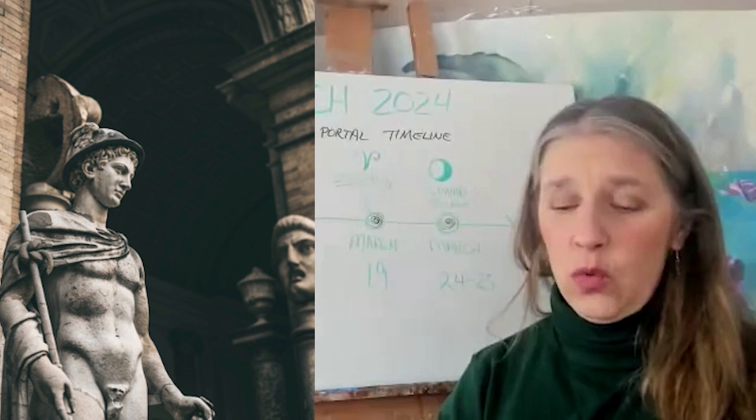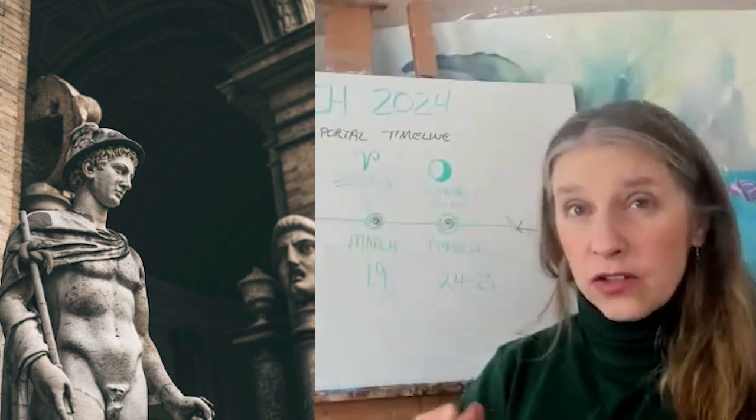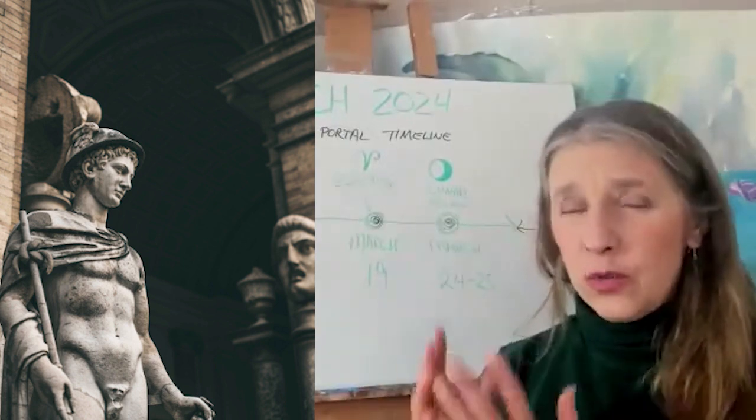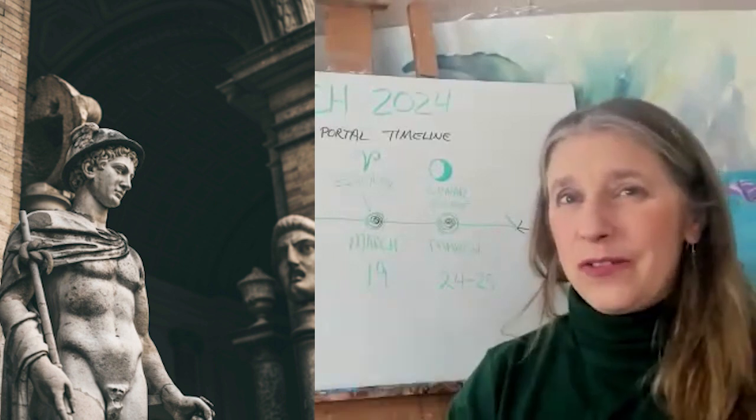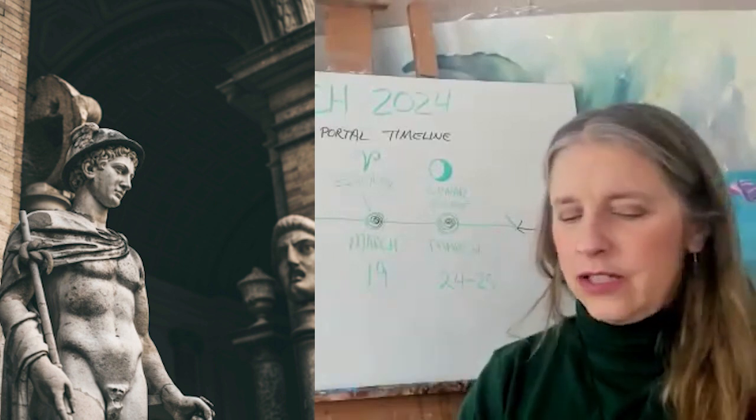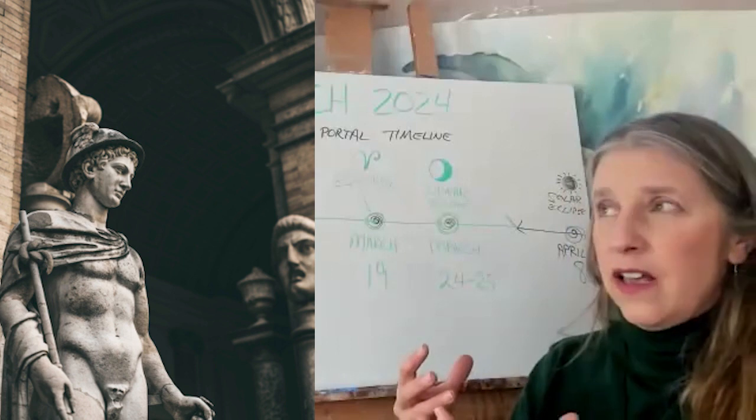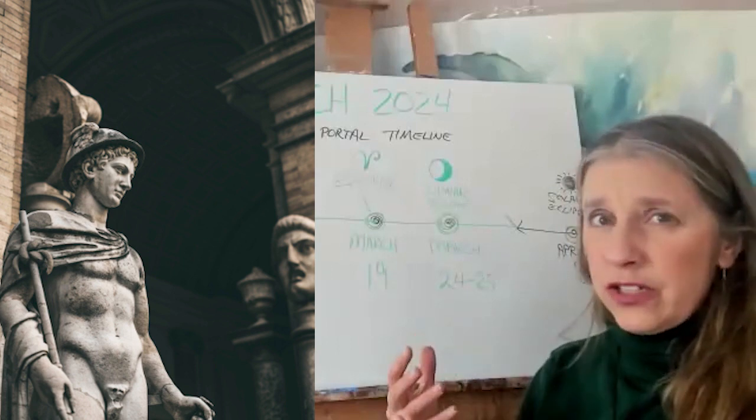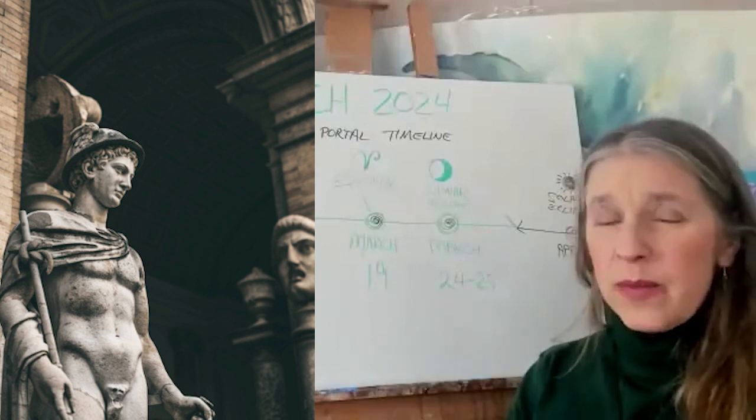Mercury is the spirit of higher knowledge and also a guide between the worlds, and also an initiator into the wisdom schools often. He's showing up here to show us that this is again a point of initiation. What does that mean?